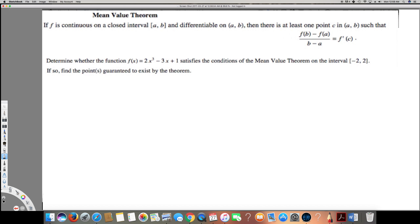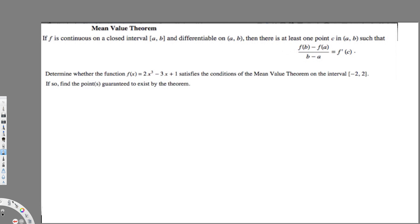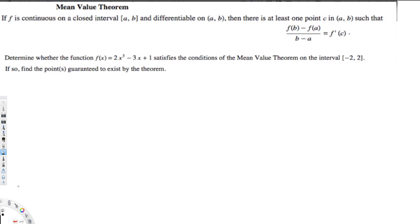Hey, what's going on guys? Let's do this problem right here. The question is asking: determine whether the function f(x) = 2x³ - 3x + 1 satisfies the conditions of the Mean Value Theorem on the interval [-2, 2]. If so, find the points guaranteed to exist by the theorem.